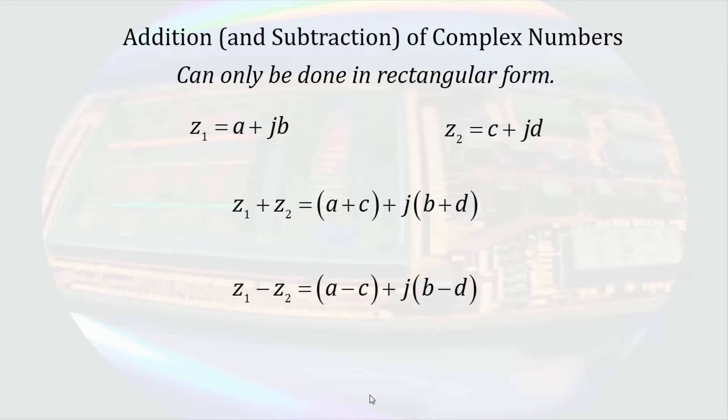So z1 minus z2 is equal to quantity a minus c plus j times the quantity b minus d. Moving on to multiplication. If we take the same two arbitrary complex numbers and multiply them, in rectangular form, we multiply the numbers as we would any other binomial using FOIL.